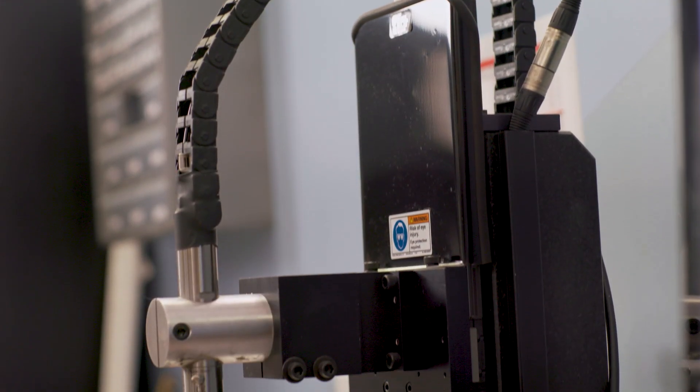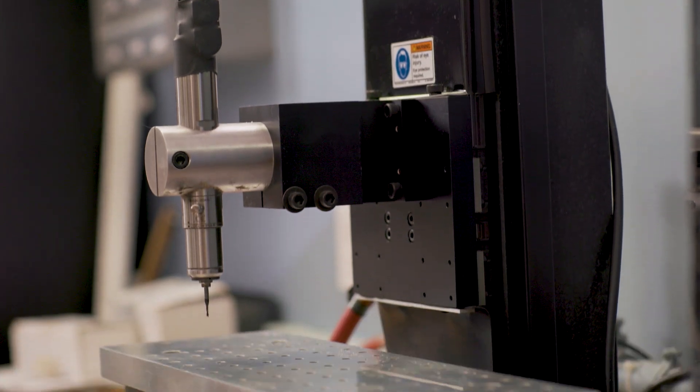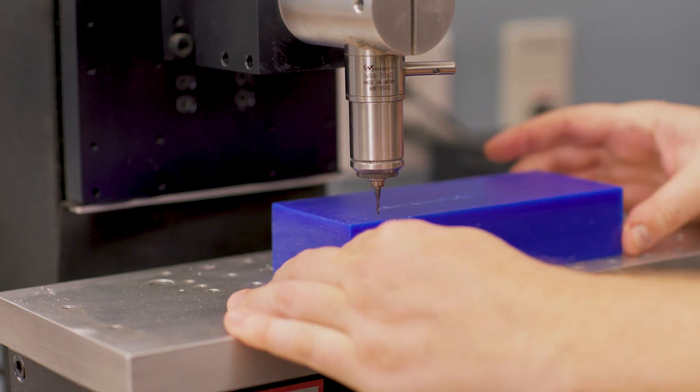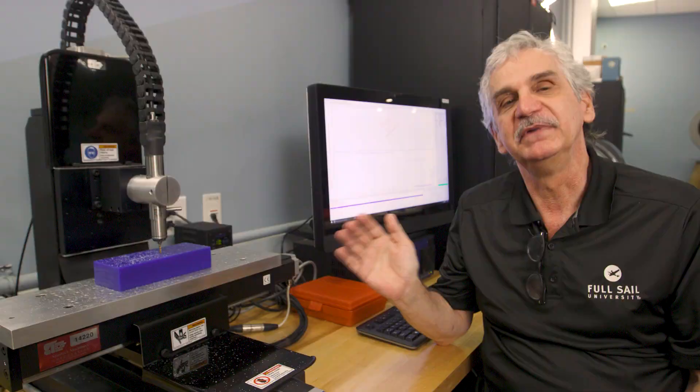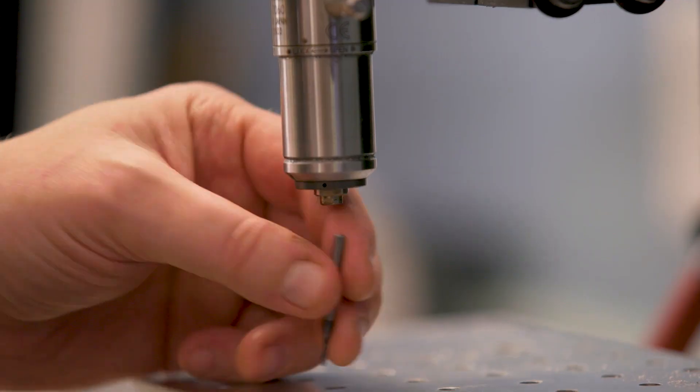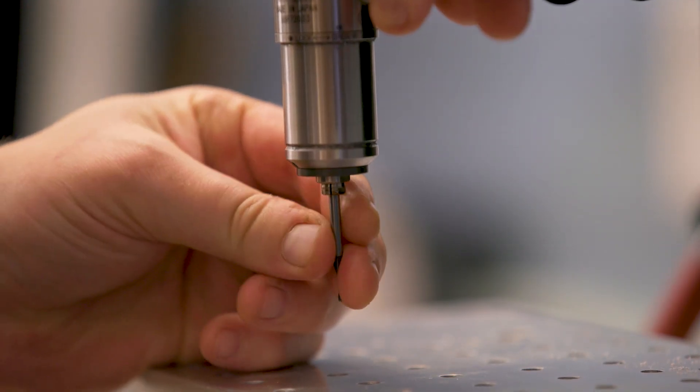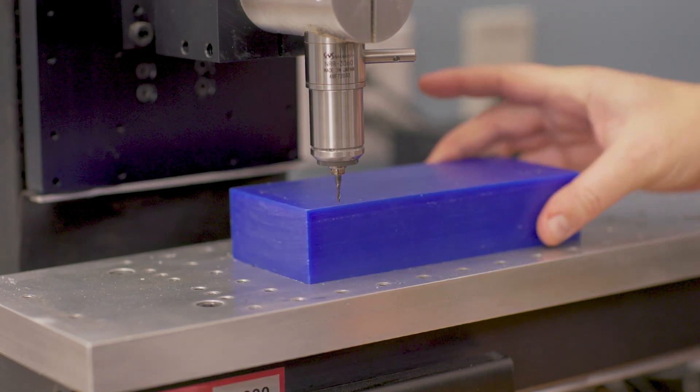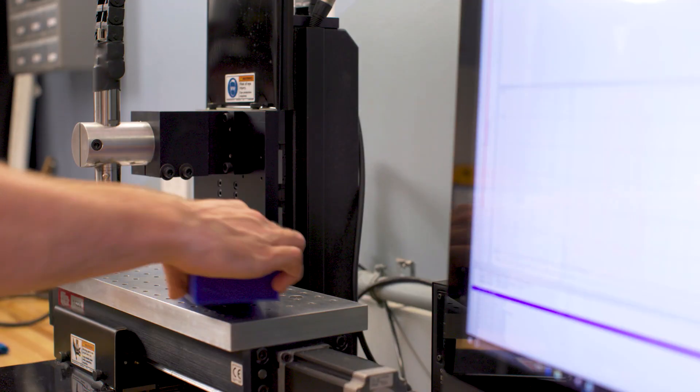This is our CNC mill and unlike the 3D printer which is an additive form of fabrication where models are created slice by slice, milling is a subtractive form of manufacturing where students put in a solid block of plastic, metal or wood and remove the material to get their desired part.